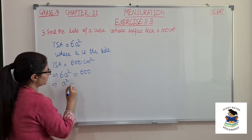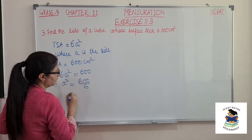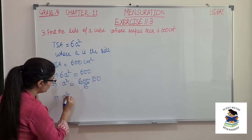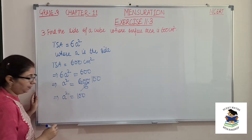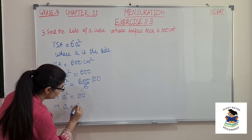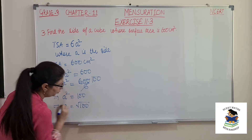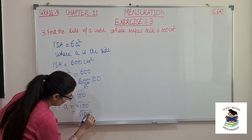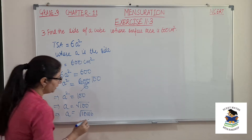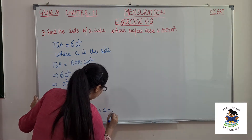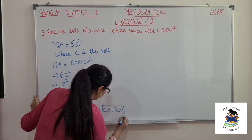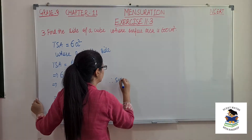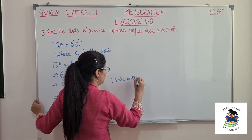This 6 will go to the other side — it will be divided. So if we cancel we get 100. So a square is equal to 100. What is a then? This is the square root of 100. Square root of 100 is 10 into 10, so a is equal to 10 cm.